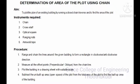The procedure to be followed: First, range and chain the lines around the given building to form a rectangle in clockwise or anti-clockwise direction. Then measure all the offset points from the chain lines. Then plot the building in the drawing sheet with suitable scale.